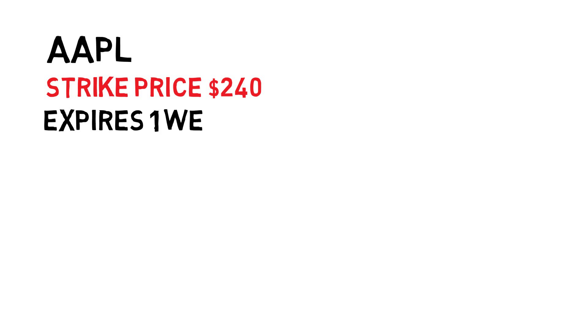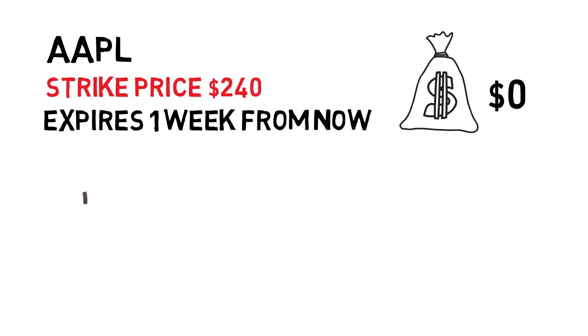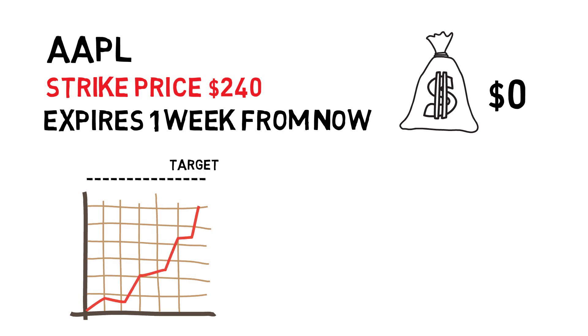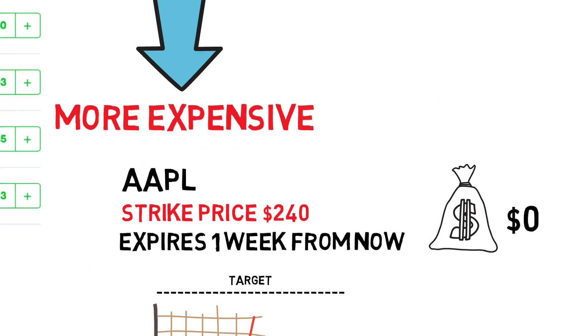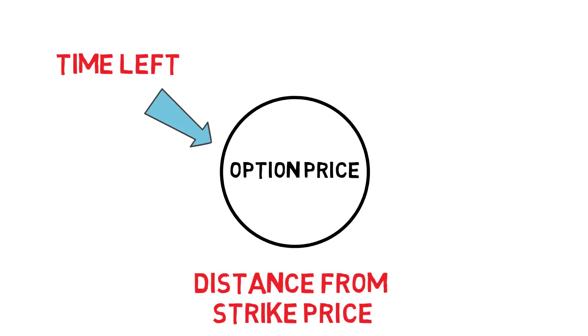Options with strike prices that need the stock to move in order to get there are called out of the money and are usually much less expensive. For example, an Apple call for a $240 strike expiring in a week is going to cost basically $0 because the chance of Apple doubling in price in a week is right around 0%. Essentially, it comes down to probability. Options with a higher probability of ending up in the money are going to be more expensive. In its most basic form, it comes down to how far away the strike price is, how much time is left until expiration, and what is the volatility on the stock itself.